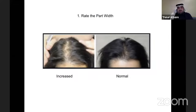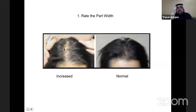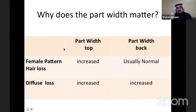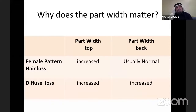Why is parting the hair important? These are two different patients — one has a normal part, the other has increased width of the part. It's important to notice whether the increased width is only in the top part or also in the occipital area. If only in the top, the patient most likely has female pattern hair loss — androgenetic alopecia. If the part is wide in front and also in the back, that indicates diffuse hair loss.